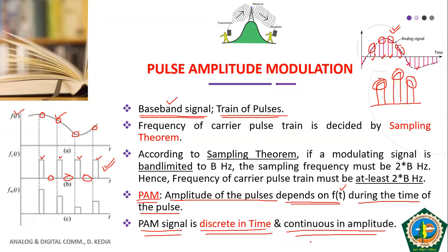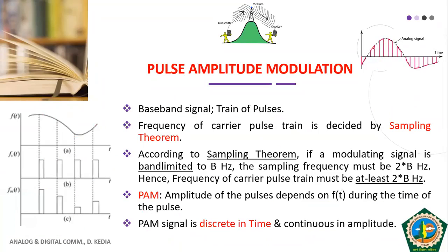The PAM signal is obtained by simply multiplying the modulating signal with the carrier train of pulses. If you look at the pink-colored pulse — that is the PAM signal — it is obtained from the modulating signal multiplied by the train of pulses. This is how we obtain the PAM signal.